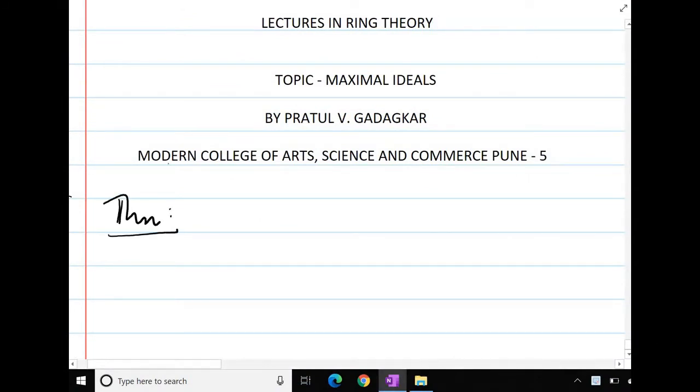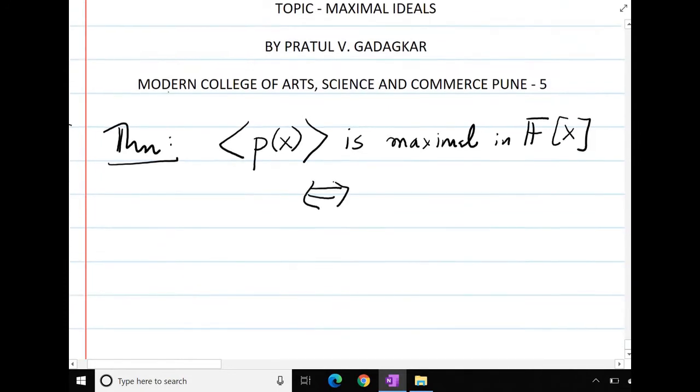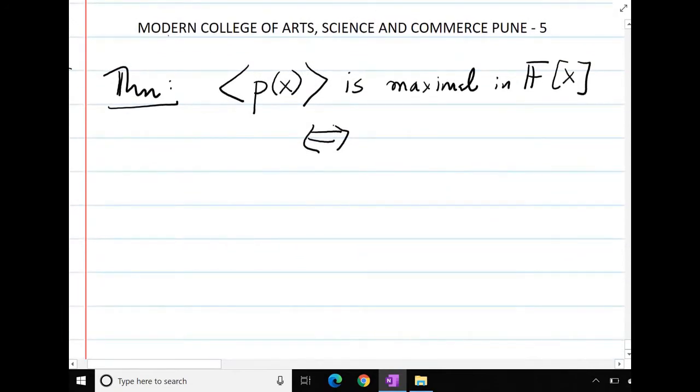But if an ideal generated by b(x) is maximal in f[x], f is a field if and only if b(x) is an irreducible polynomial in f[x].